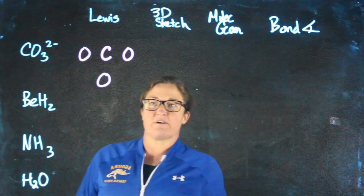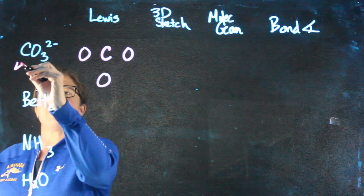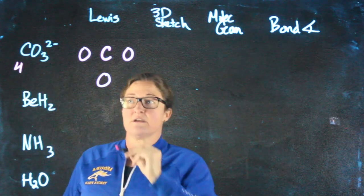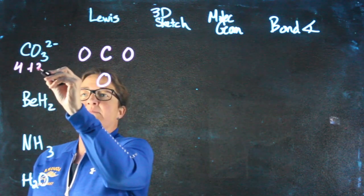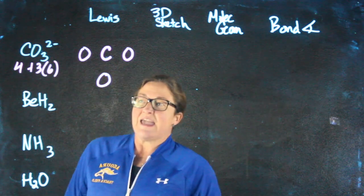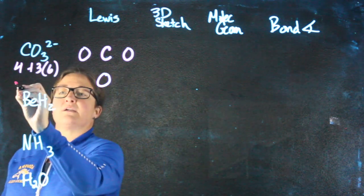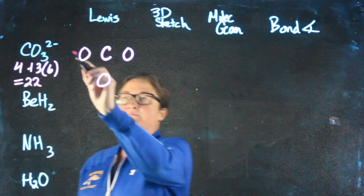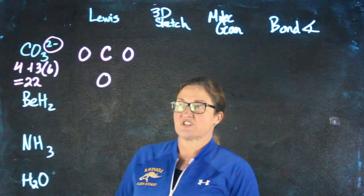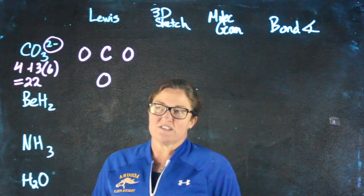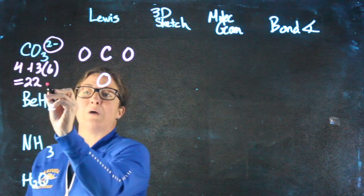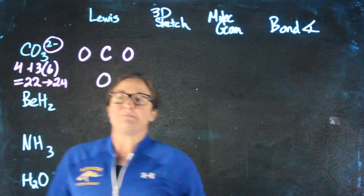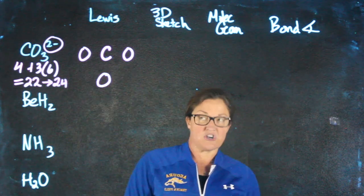I need to add up the total number of valence electrons. Carbon has 4 valence electrons because it's in group 4. Each oxygen has 6. 18 plus 4 gives me 22 electrons. But remember, with an ion, the number of electrons changes. This has a charge of minus 2, meaning it has 2 extra electrons. So I'm going to make this structure using 24 electrons.